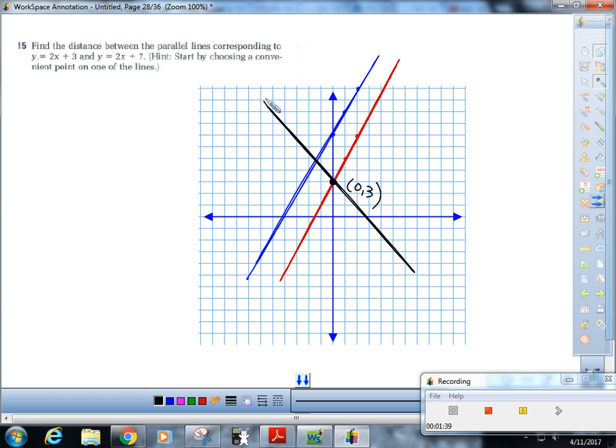Oh well, hold on. We chose a convenient point, so we should be able to name the equation of this black line right now. What's the slope of the black line? Because it's perpendicular to the red one, negative one-half. Excellent. And what's the y-intercept? It's right there. So what is that equation?